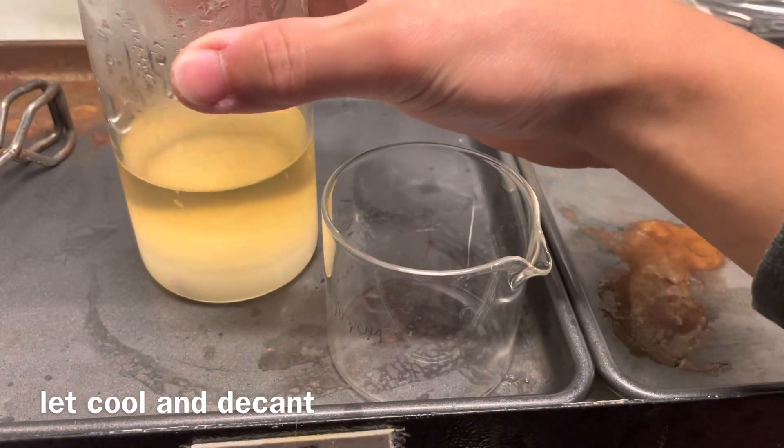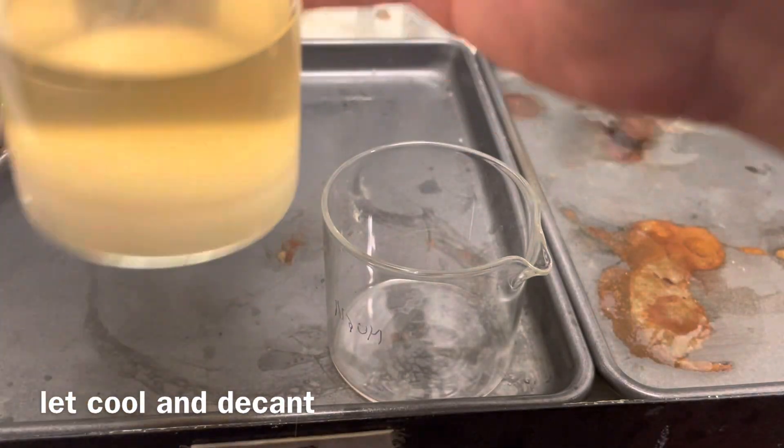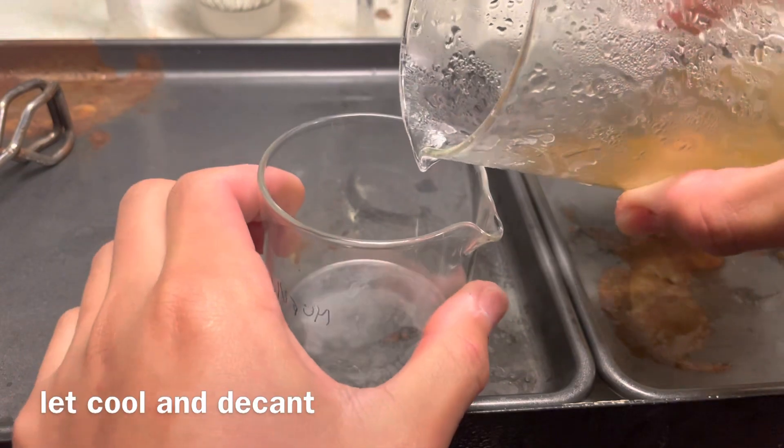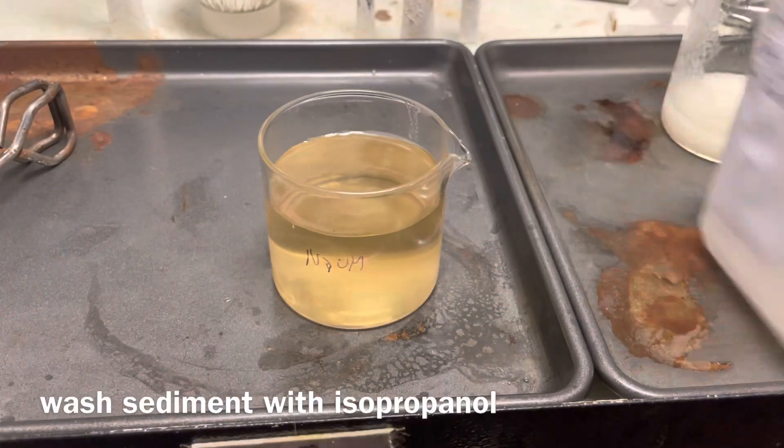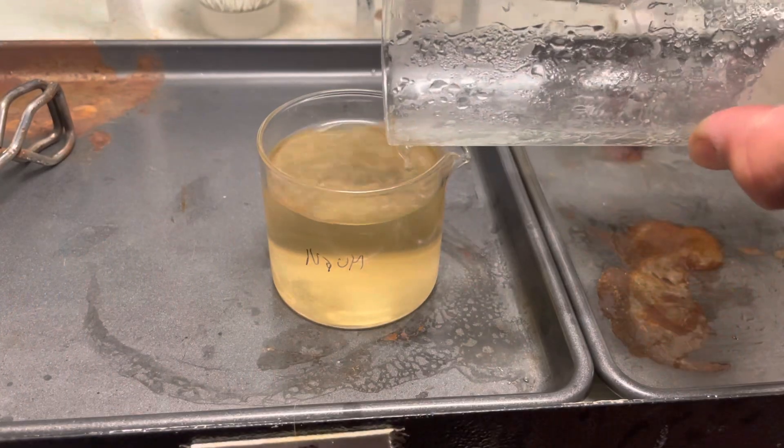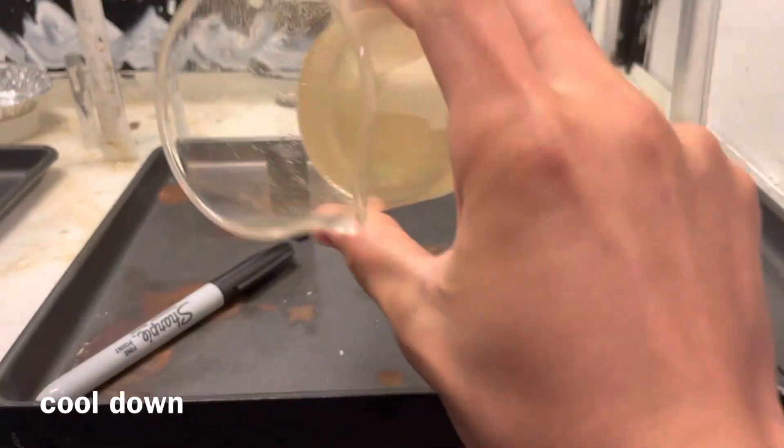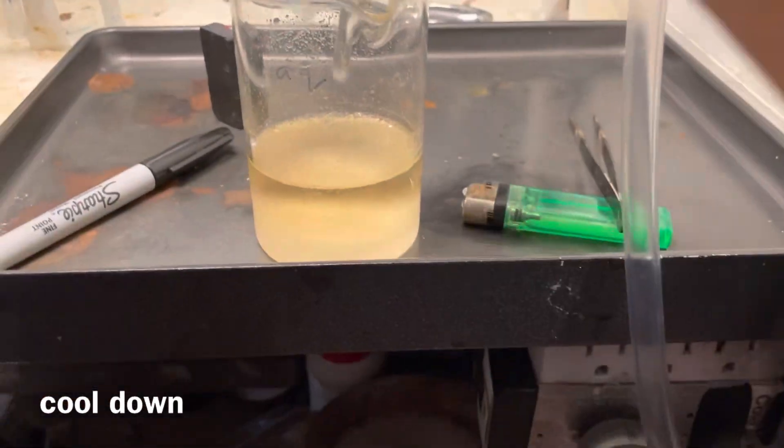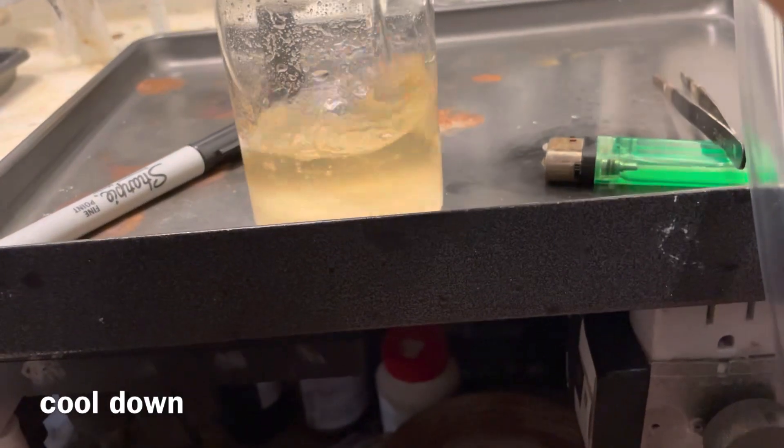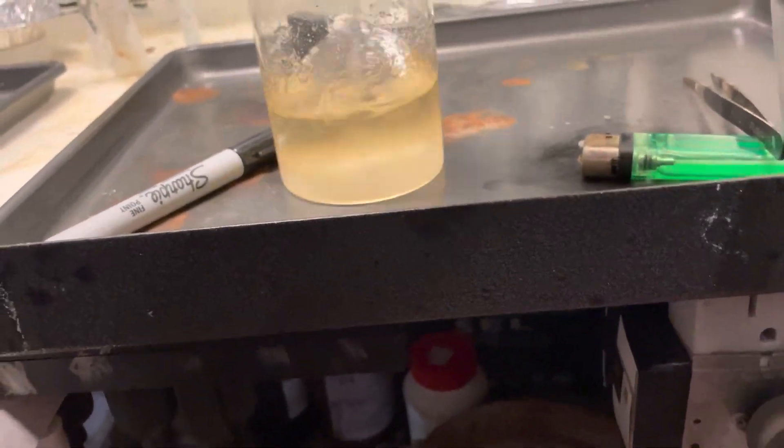Cool this down to room temperature, and now decant your solution from the sediment. The sediment, again, sodium sulfate, and also some other stuff. Wash it with a little bit of isopropanol, and then acidify the whole thing and boil it down. And then cool it down again. And here you can see the sodium sulfate has precipitated out.